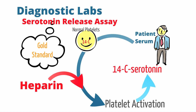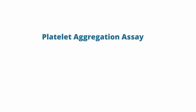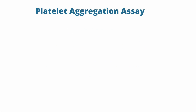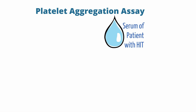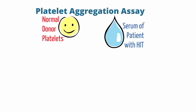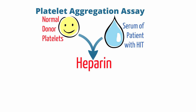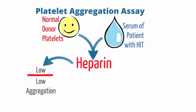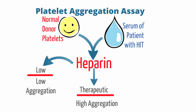Another test used to detect HIT type 2 is the platelet aggregation assay. Normal platelets are mixed with the serum of the patient with suspected HIT, then different doses of heparin are introduced into three samples. If the patient has HIT, at low and therapeutic levels there will be low and high aggregation respectively. At high doses, no aggregation occurs as the heparin PF4 antibodies become overwhelmed.